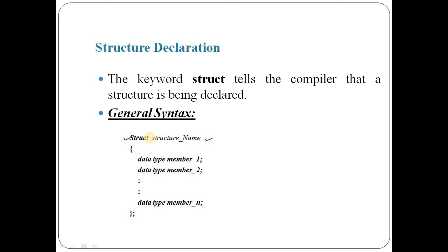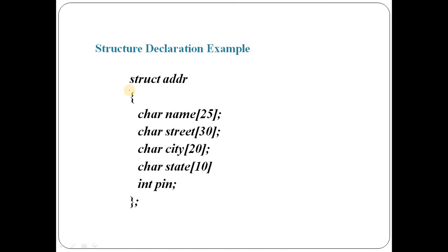This is the syntax of the structure. We use the struct keyword and write the struct name — any user-defined name can be written here. Then we start with the curly braces and declare different data types: data type 1, 2, 3 with variable names member1, member2, and memberN. Then we close the braces and terminate with a semicolon. For example, I can define a structure of address, where the first four members are characters and one member is of type integer.